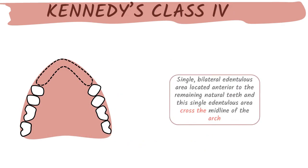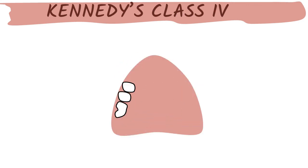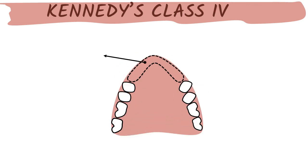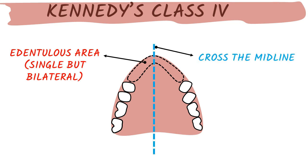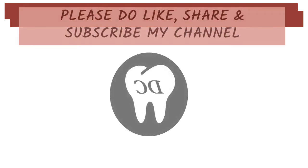Kennedy's Class 4 is a single but bilateral edentulous area located anterior to the remaining natural teeth, and this edentulous area crosses the midline of the arch — both points are very important. As you can see in the figure, if we draw a line from the midline, the edentulous area crosses it, making it bilateral. It is anterior to the natural dentition. This concludes the difference between Kennedy Classes 1, 2, 3, and 4.